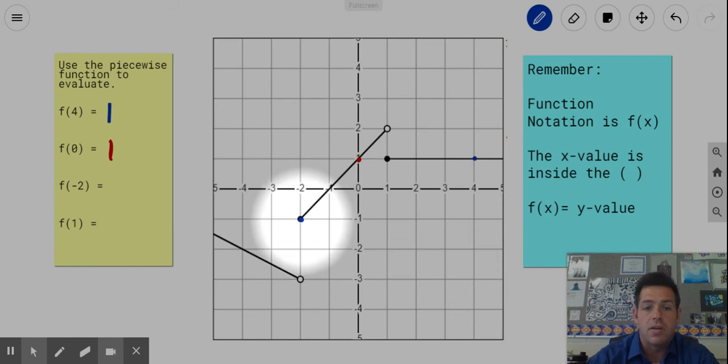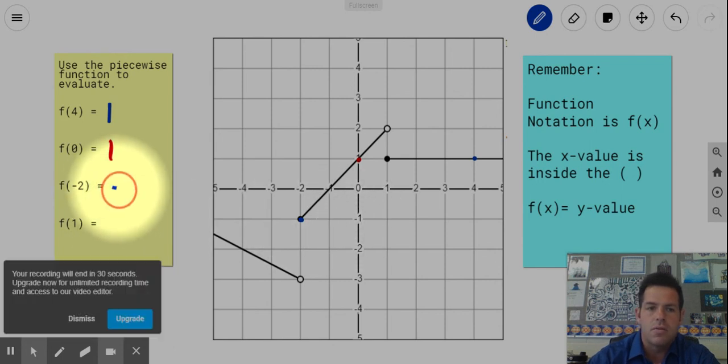So we want to go ahead and think about this. Our x value is negative two. We already knew that. What's the y value there? The y value would be negative one. There's the y value is right there, negative one. So when it comes to f of negative two, it's equal to negative one.